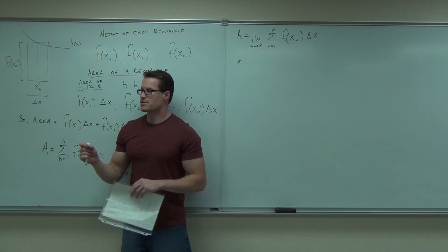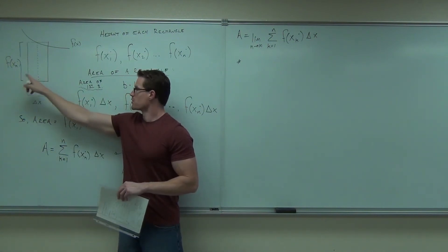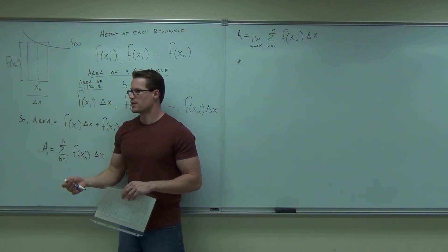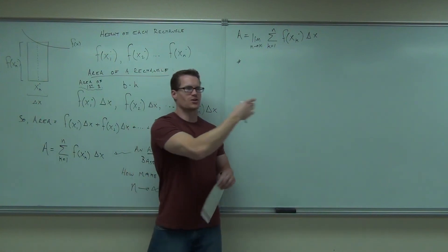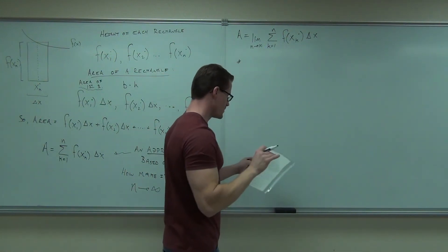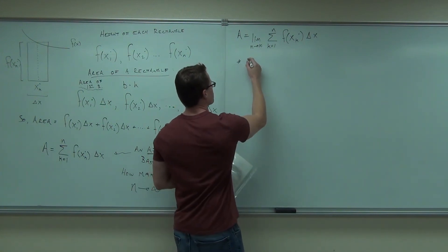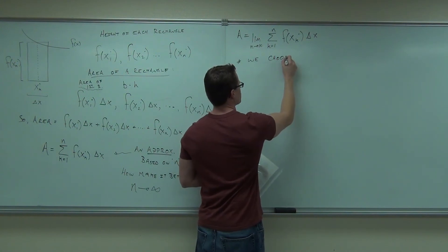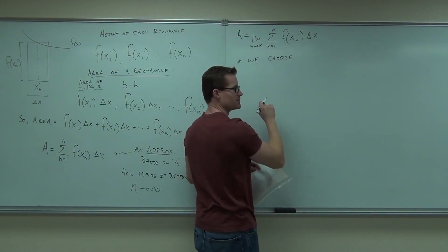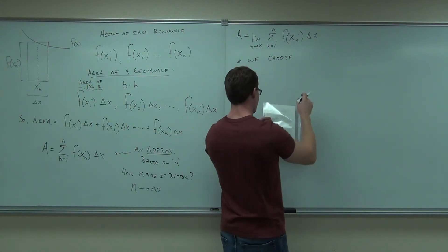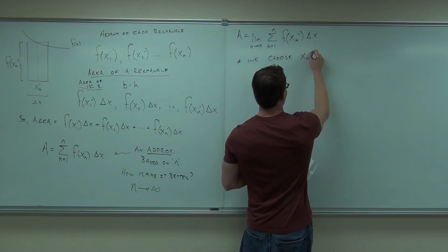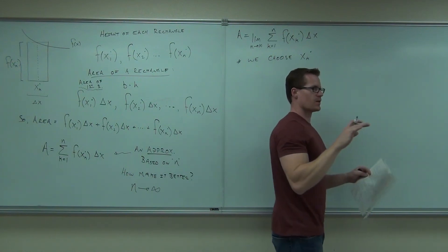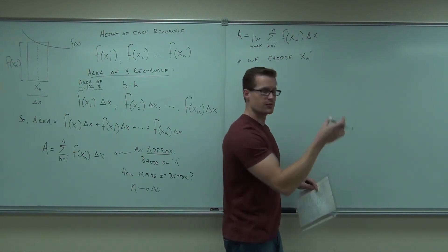What we choose it to be is either the left for all of them, the right for all of them, or the middle for all of them — that way we're more consistent and we can work the formula better. You don't want to pick arbitrary random points because it would be hard to do the next step. So in general, we typically choose our x sub k dot to be left endpoints, right endpoints, or midpoints of each subinterval.